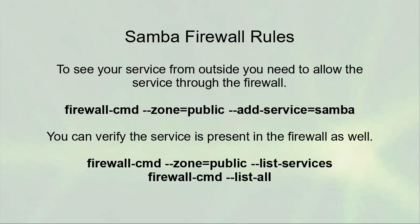In order to allow other machines outside of your individual server to mount your Samba shares, you need to open up a hole in the firewall. The easiest way to do that is to add the Samba service. You can use the firewall-cmd command — you can add the zone if you want, then --add-service=samba.